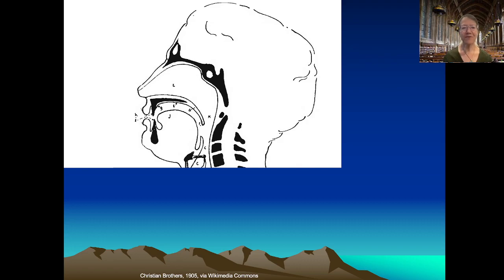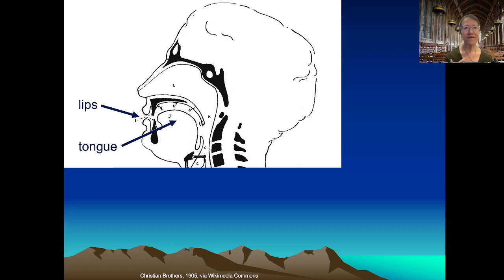Let's begin with a picture of a human head in a sagittal view so we can see the articulators in the vocal tract, including the lips and the tongue, which essentially is a large muscle. The configuration of the lips, tongue, and for example the velum contribute to determining the configuration of the articulators that distinguish the vowels and consonants in the language being spoken.